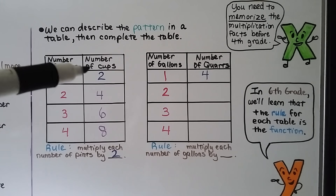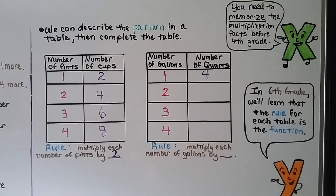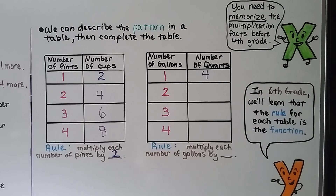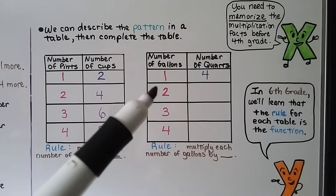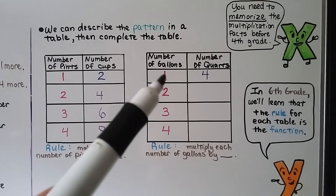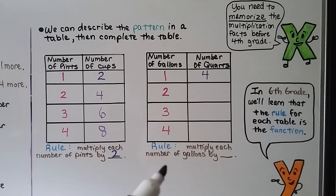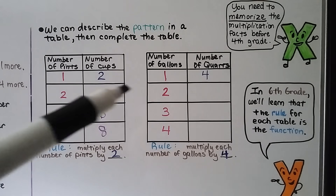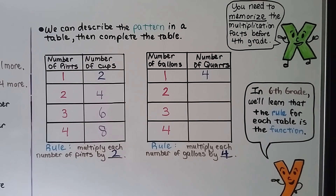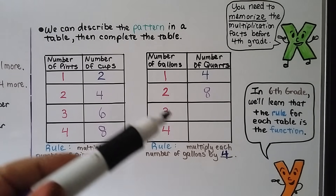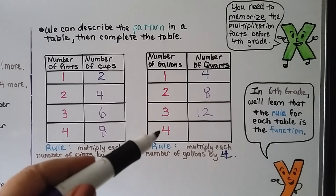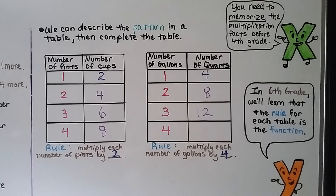Knowing what 1 unit is equal to helps us finish the table. For the gallons-to-quarts table, 1 gallon is 4 quarts, so our rule is to multiply each number of gallons by 4. For 2 gallons: 2×4=8 quarts. For 3 gallons: 3×4=12 quarts. For 4 gallons: 4×4=16 quarts.